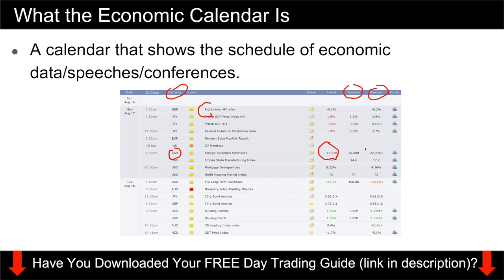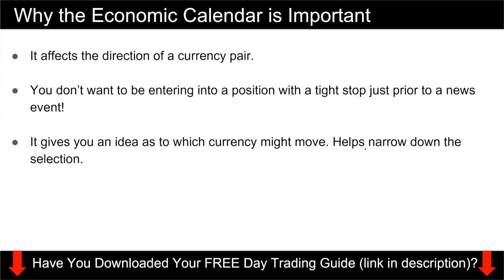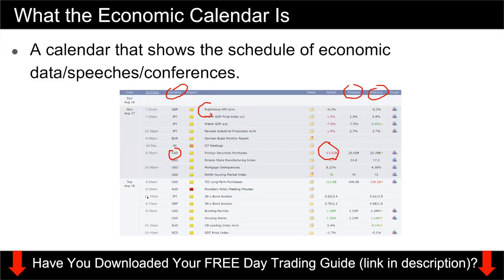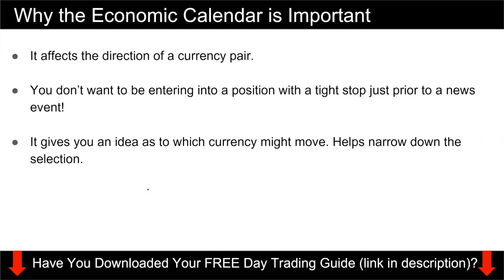Why should you be using the economic calendar? Obviously, economic data is going to affect the direction of a currency pair — that's a no-brainer. Think of it this way: let's say there is news happening at 9:30 and you are trading the Aussie dollar. If you don't look at the economic calendar and you enter an Aussie dollar trade at 9 a.m. with a very tight stop loss, that is just flushing money down the toilet. If there's going to be high-impact news and you enter with a tight stop loss, the expected volatility will almost certainly stop you out.